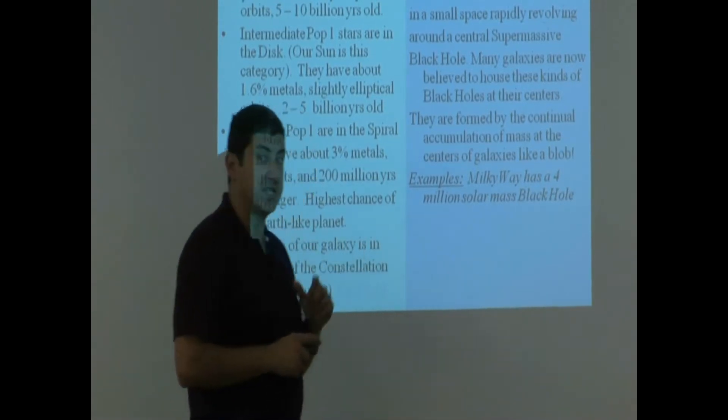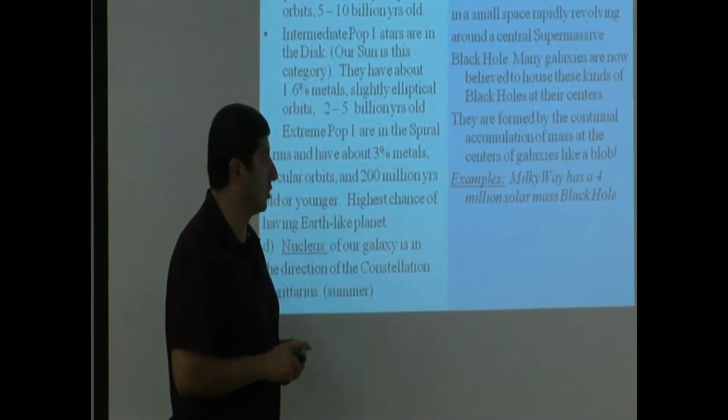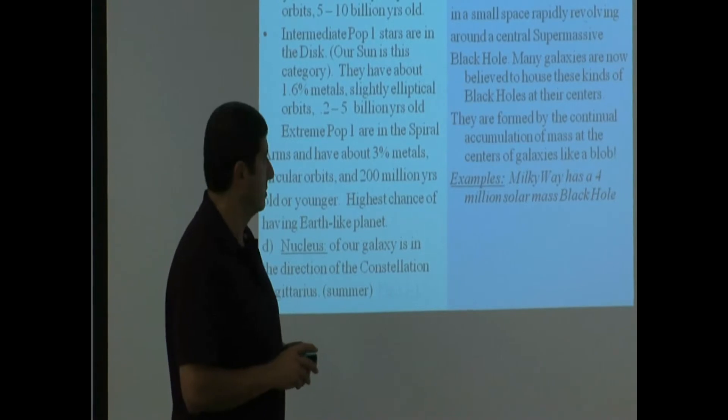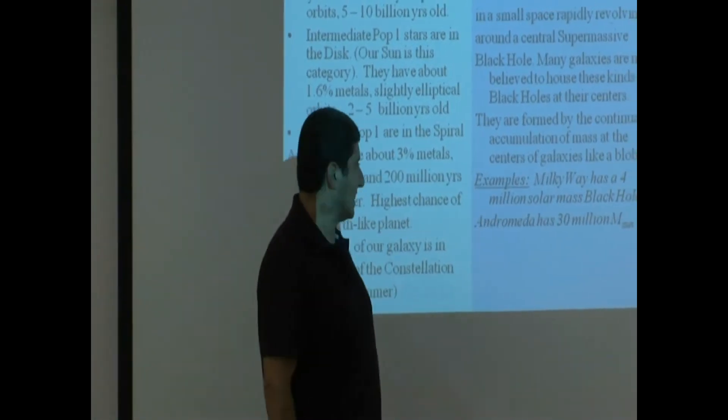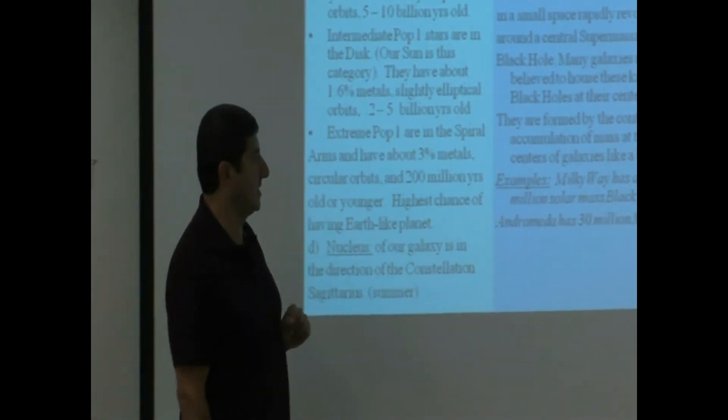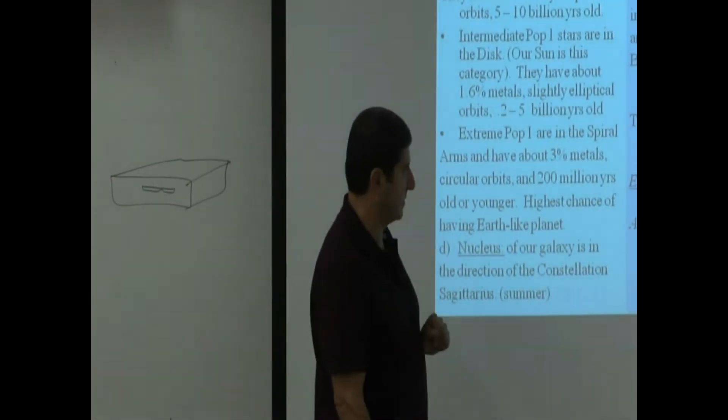For example, the Milky Way has what we estimate to be a 4 million solar mass black hole, 4 million times the mass of the sun. Andromeda Galaxy has a 30 million solar mass black hole, even bigger.